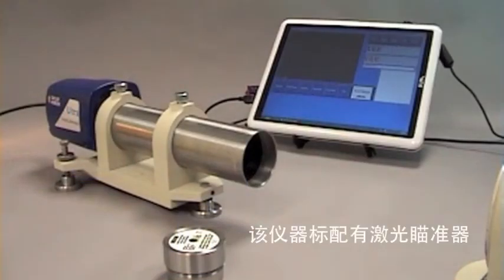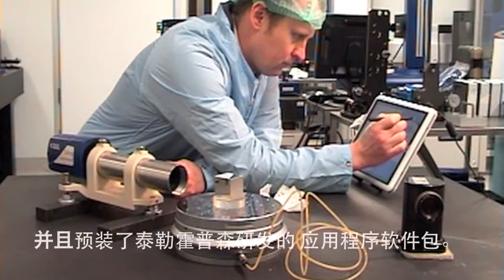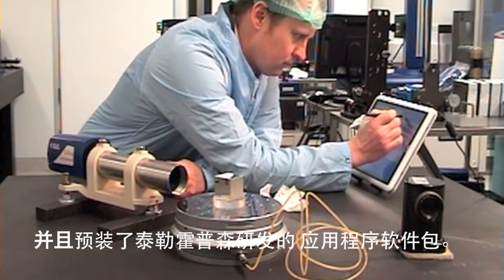With the system as standard you get a laser alignment aid and a tablet PC which acts as the autocollimator's digital display as well as having the Taylor Hobson application software packages preloaded.